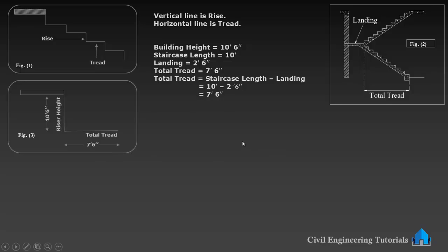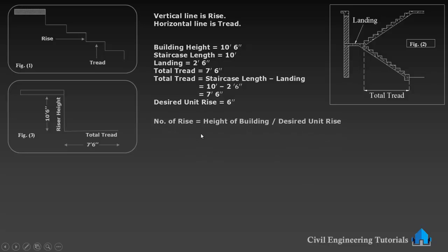Now we have to calculate the number of risers. To do that, we need to choose a desired unit rise. The rise can be 5 inches, 6 inches, or 7 inches. Here I am taking 6 inches. The formula is: number of risers equals building height divided by desired unit rise. Building height is 10 feet and 6 inches, divided by 6 inches.